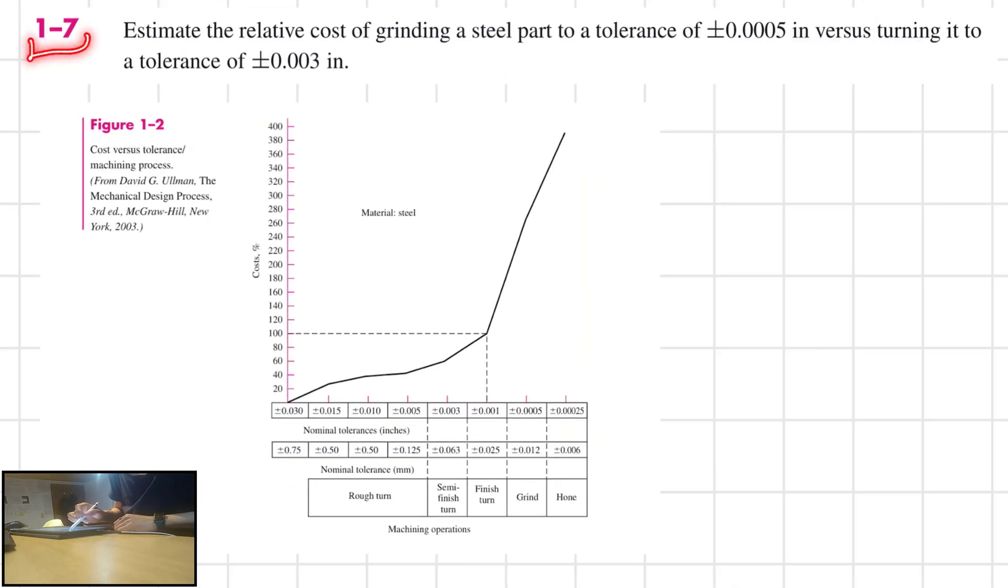Exercise 1-7. Estimate the relative cost of grinding a steel part to a tolerance of plus or minus 0.0005 inches versus turning it to a tolerance of plus or minus 0.003 inches.